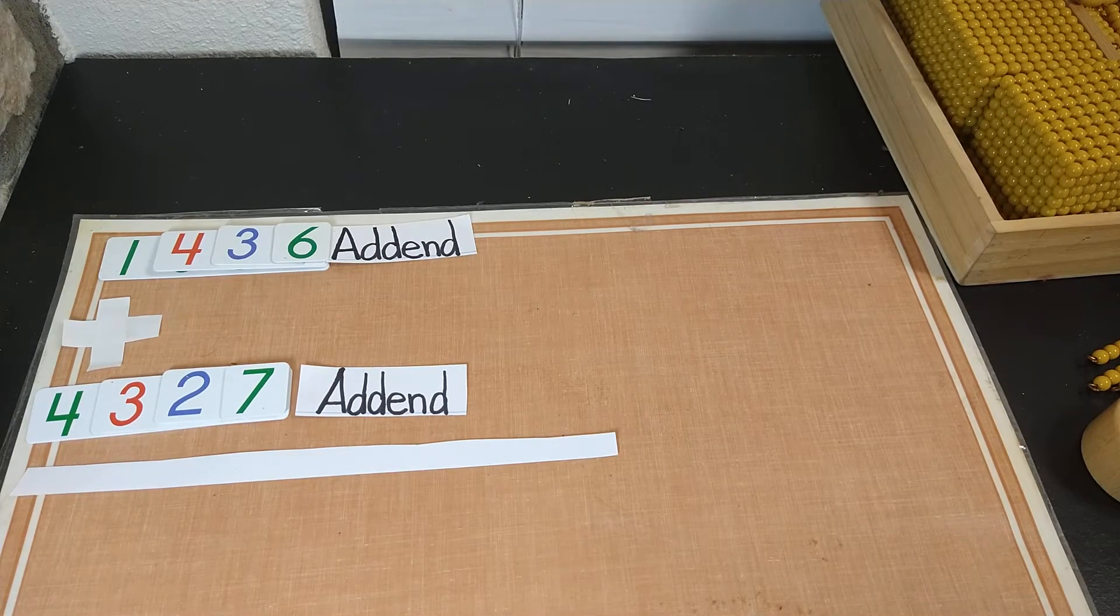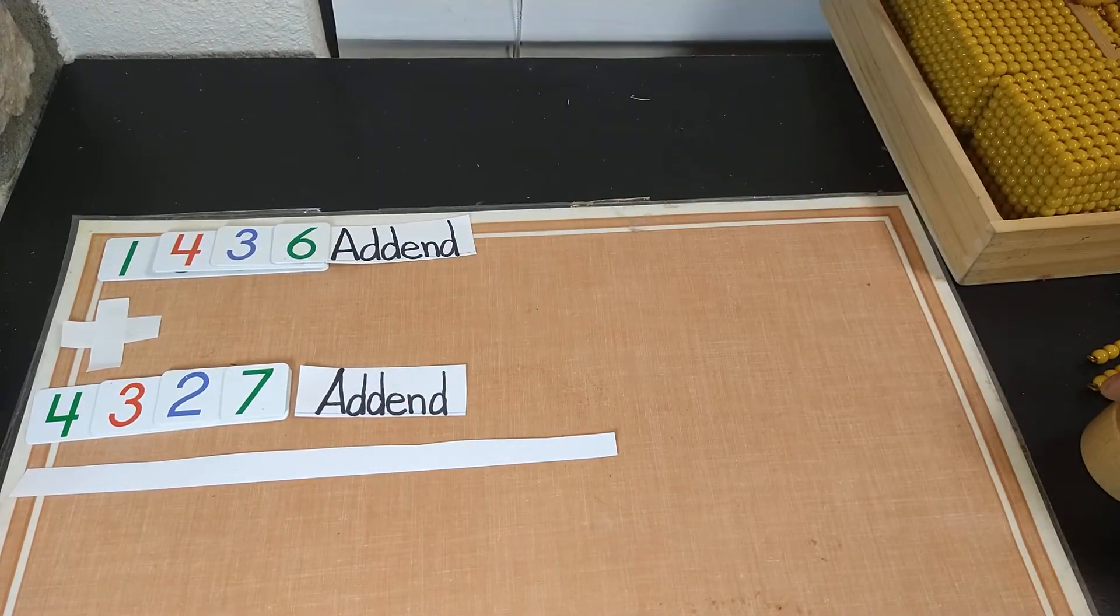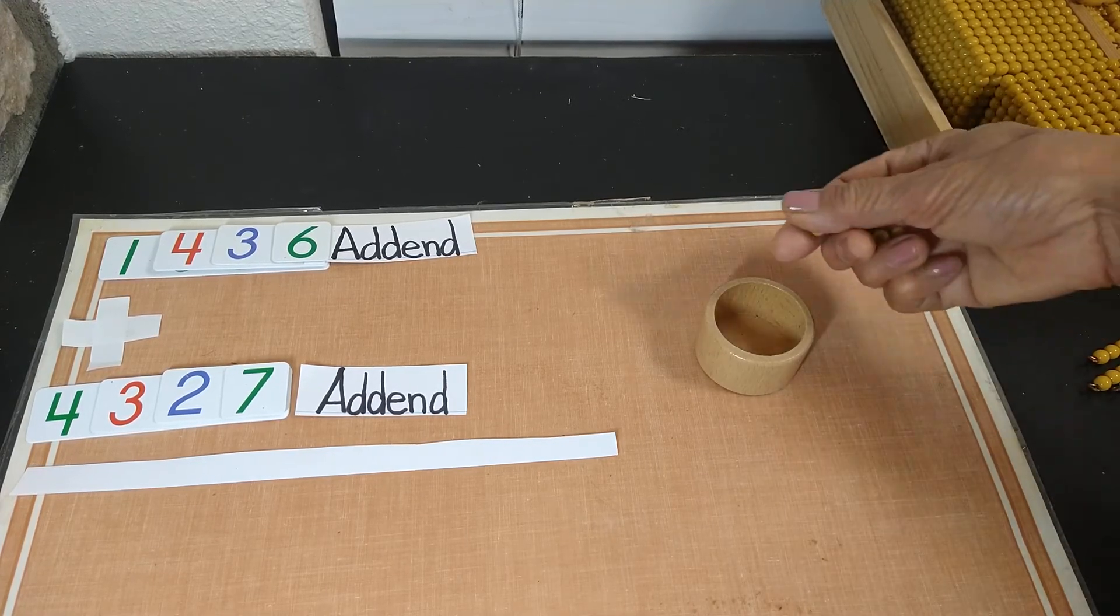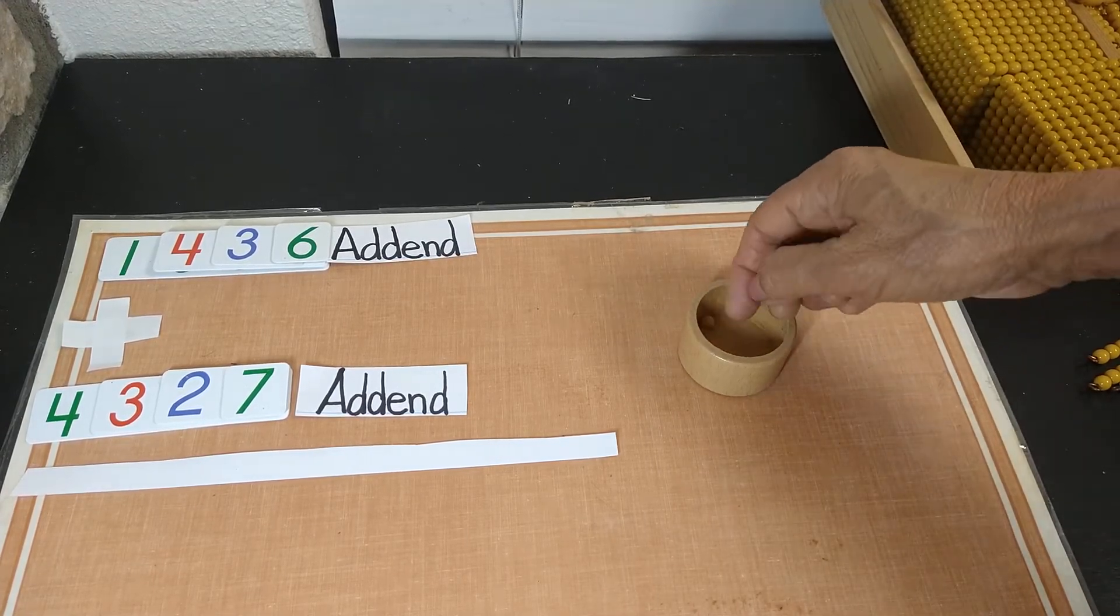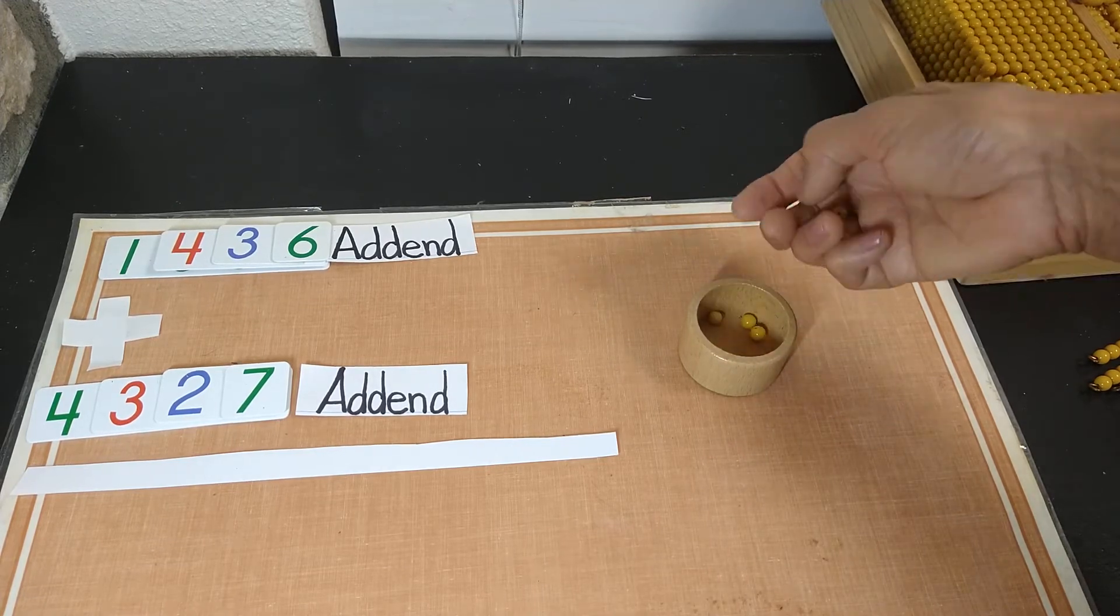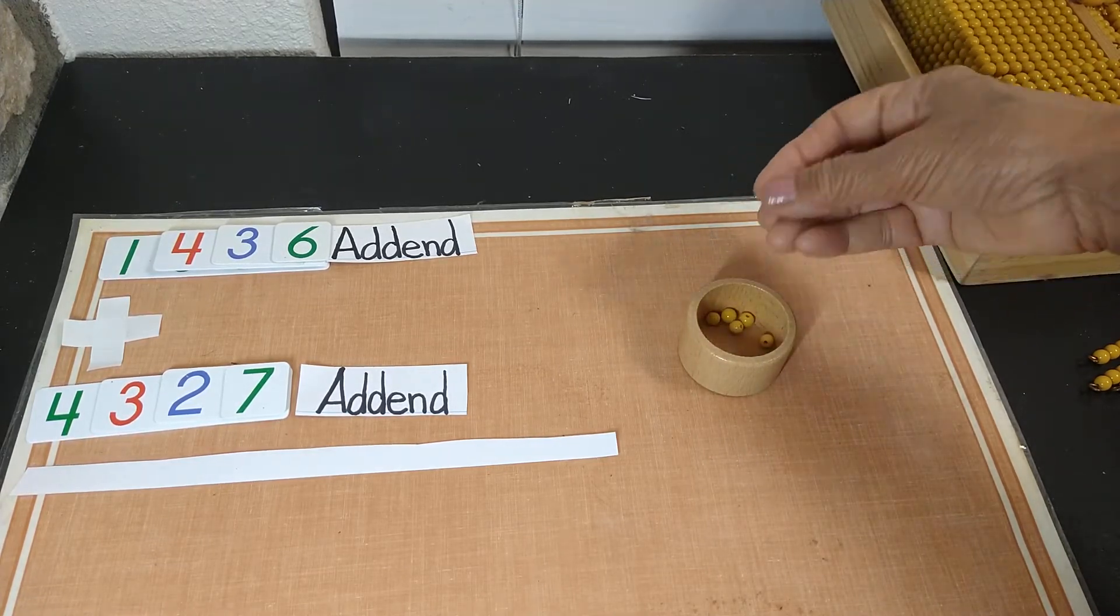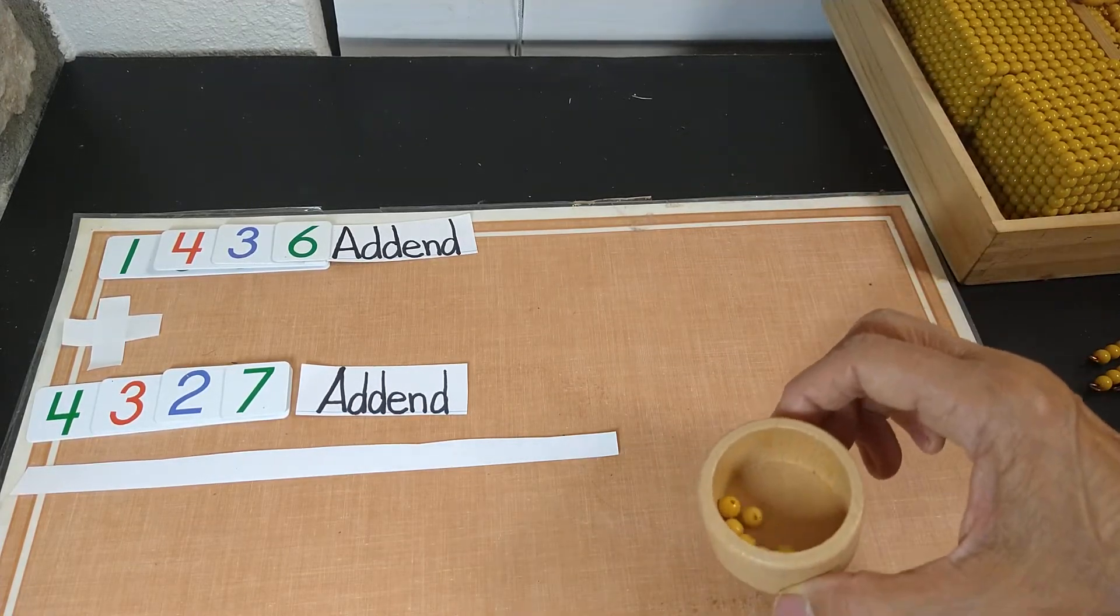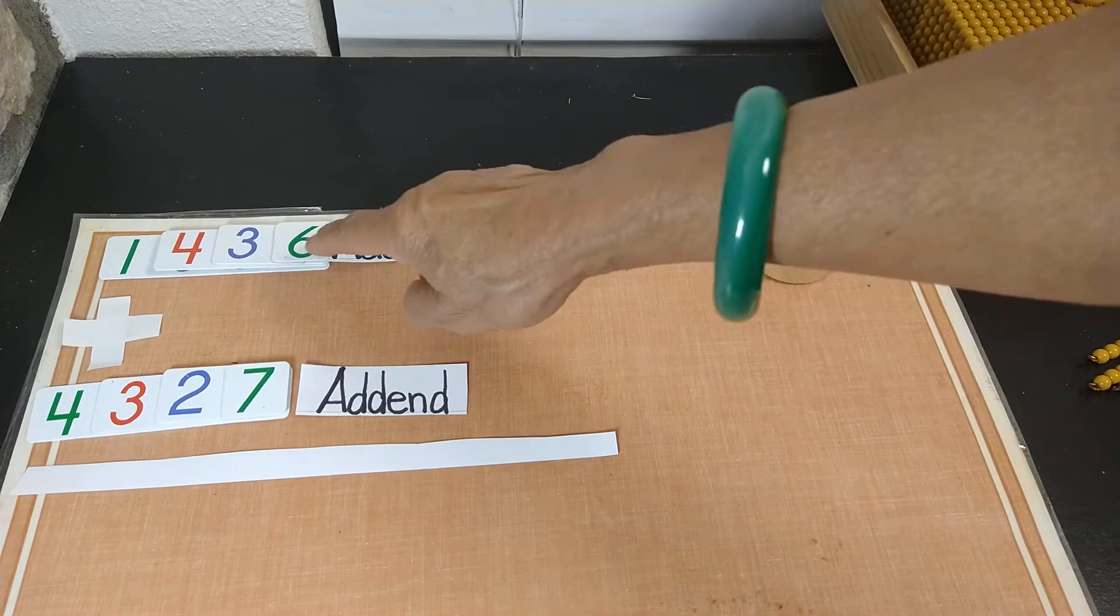So in the first addend we have how many units? That's correct. We have 6 units. So let's count together. 1 unit, 2 units, 3 units, 4 units, 5 units and 6 units. So we got 6 units because we have 6 units in the first addend.